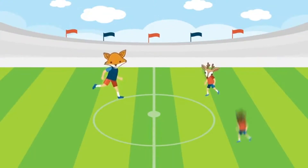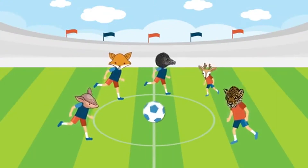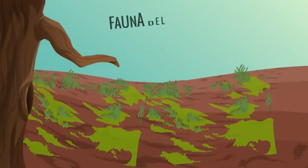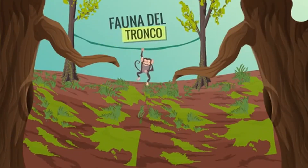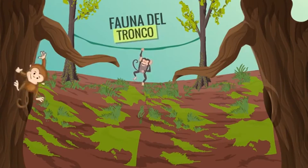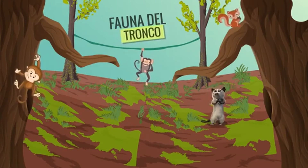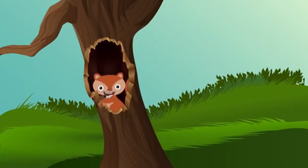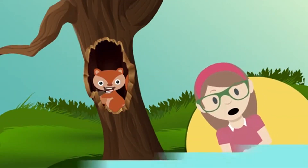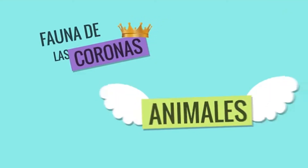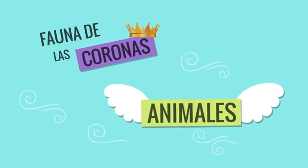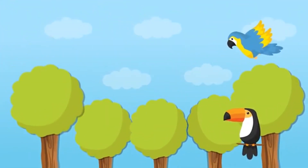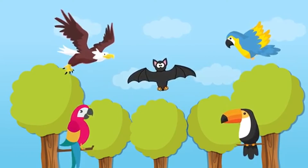De vez en cuando se animan a jugar una pichanguita. Por otra parte, en la fauna de los troncos encontramos animalitos mucho más traviesos y divertidos, como los monos, zarigüeyas y ardillas, que se refugian en los huecos de los árboles. Y por último, tenemos a la fauna de las coronas, donde podemos encontrar animales de alas y buen viento como los tucanes, loros, papagayos, murciélagos y águilas.